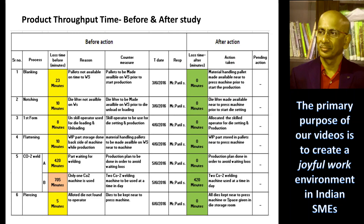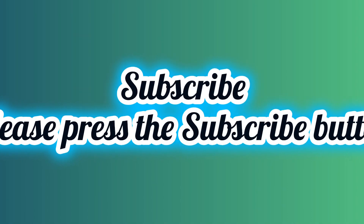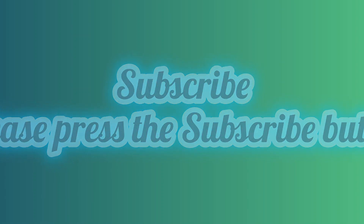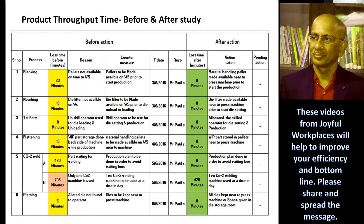It will be parallel working, actually. In throughput time studies or value stream mapping, we say that we work in series and we work in parallel. When we work in the same activity and there is one more workstation, the total activity at a workstation is 10 activities — so we split it up to two operators.